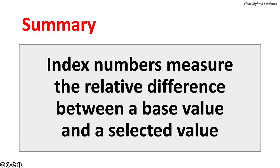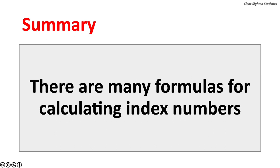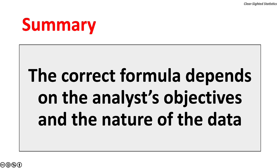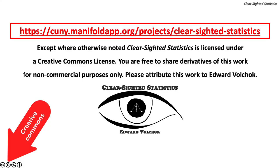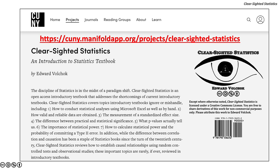To wrap up, index numbers measure the relative difference between a base value and a selected value. There are many formulas for calculating index numbers, and the correct formula depends on the analyst's objectives and the nature of the data. Clear-Sighted Statistics is licensed under a Creative Commons license; you are free to share derivatives of this work for non-commercial purposes only. Please attribute this work to Edward Volchak. You can access Clear-Sighted Statistics for free, along with its Excel and PowerPoint files, on the CUNY Commons.